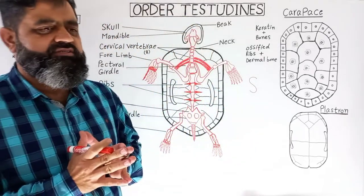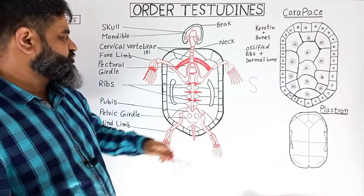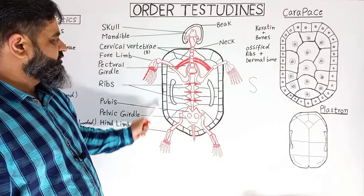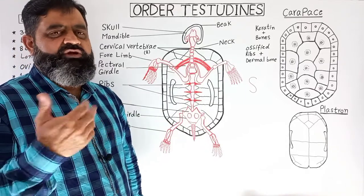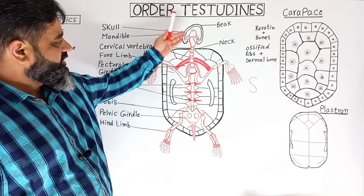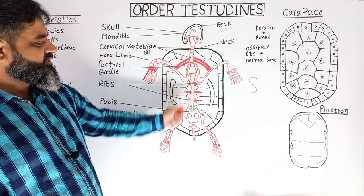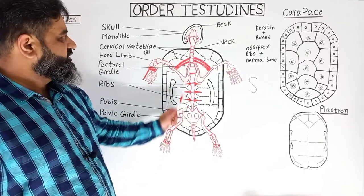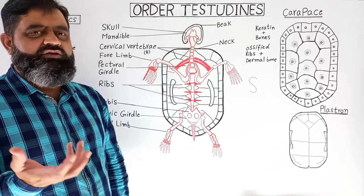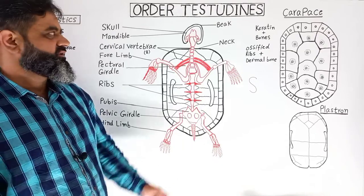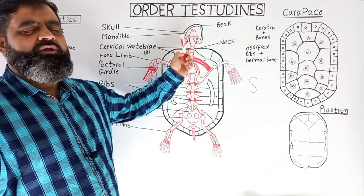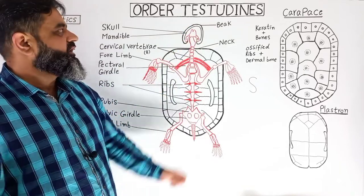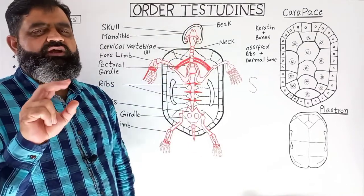Now let's discuss the internal anatomy of turtles and tortoises. In the diagram, the black shape shows the carapace on the dorsal surface, and I have taken a cross-section of the body. The red part of the diagram shows the internal skeleton. Starting at the anterior end, there is a skull made up of specialized bones. The upper mandible and lower mandible form a structure known as the beak, which aids in feeding. This beak does not contain any teeth but is horny so they can pick up food particles.